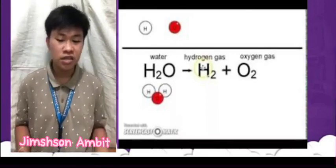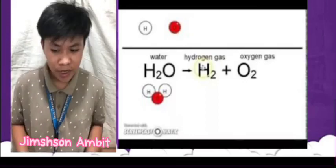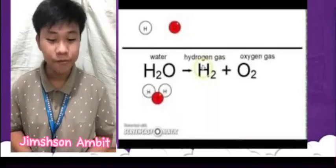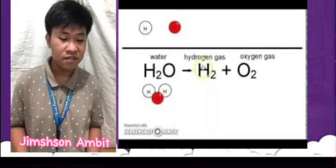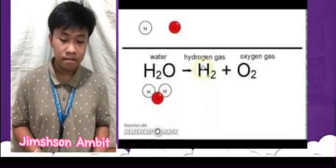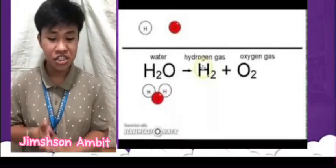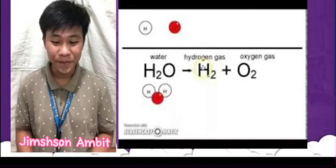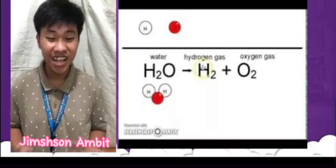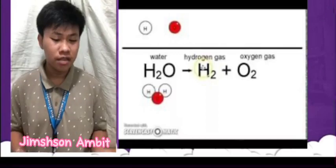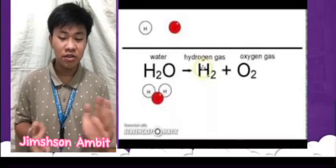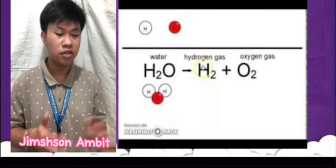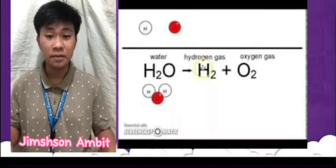We can use this equation to write a mass balance equation: mass of hydrogen plus mass of oxygen equals mass of water. This equation tells us that the total mass of the reactants must be equal to the total mass of the products.